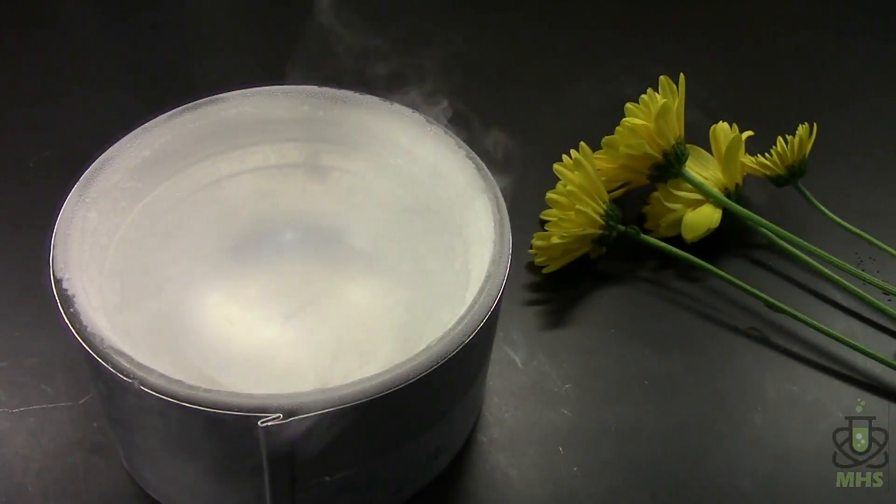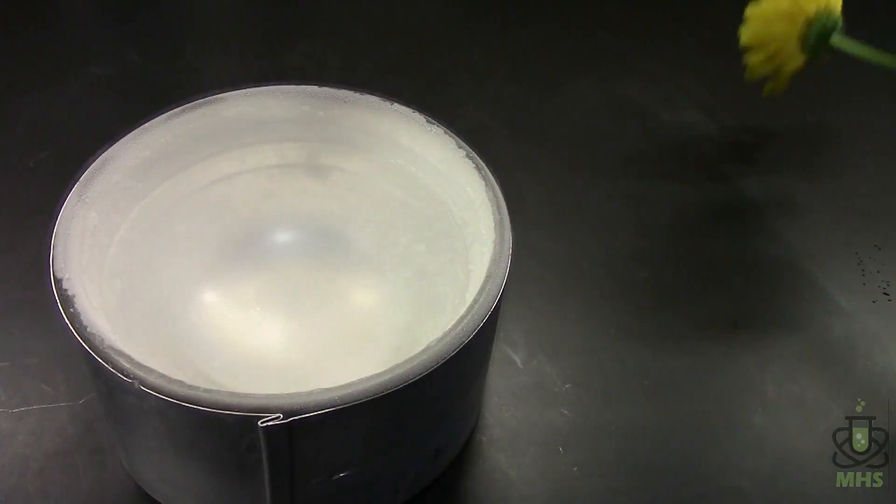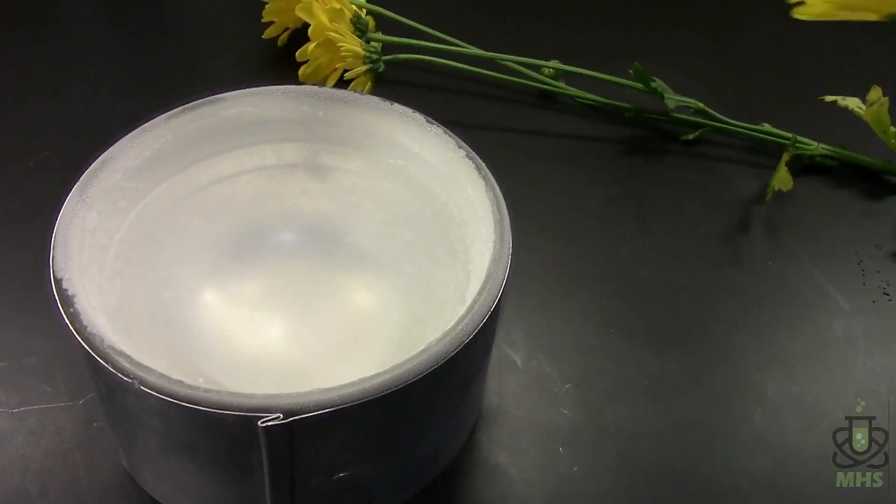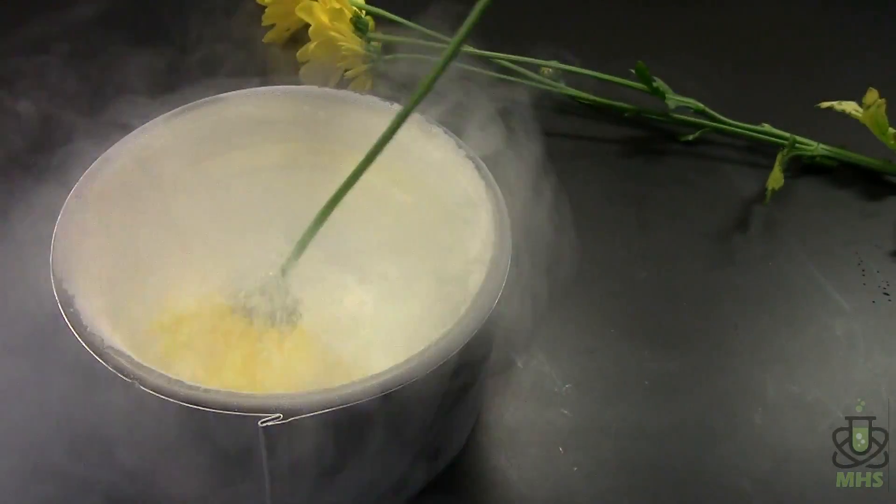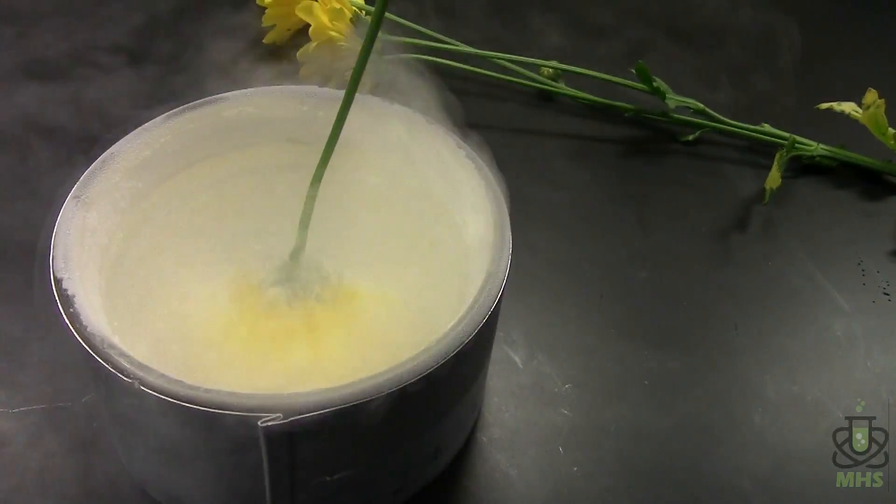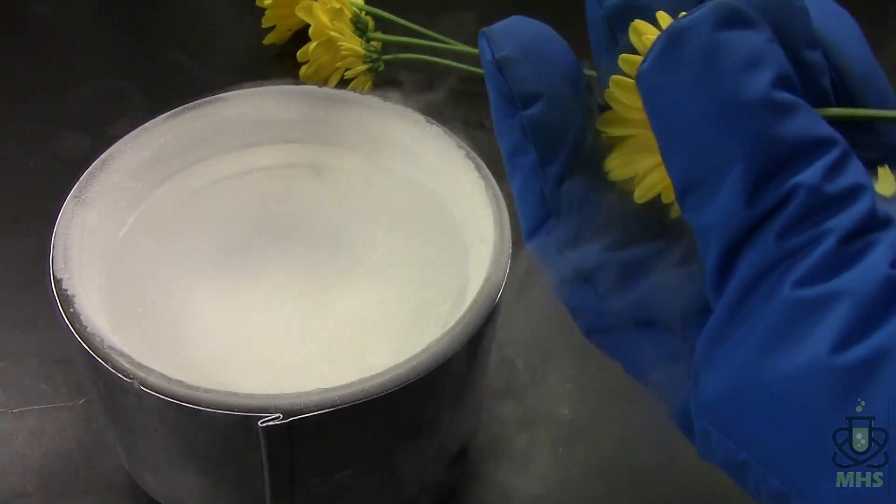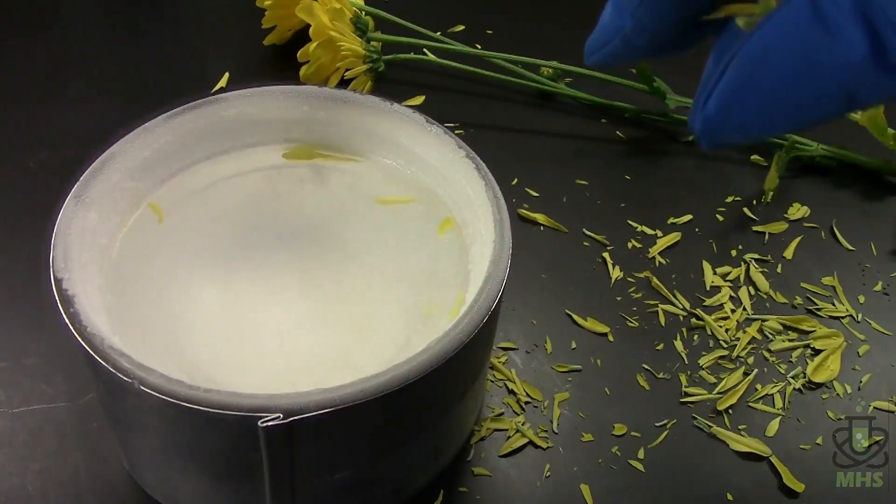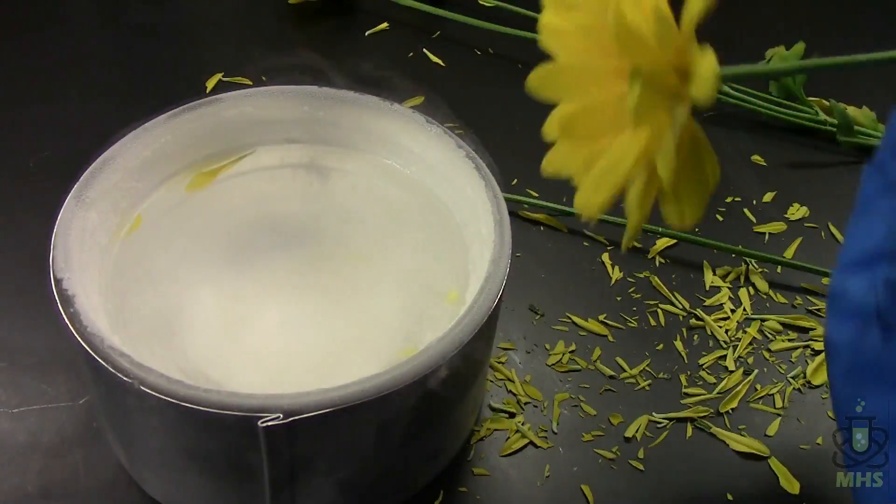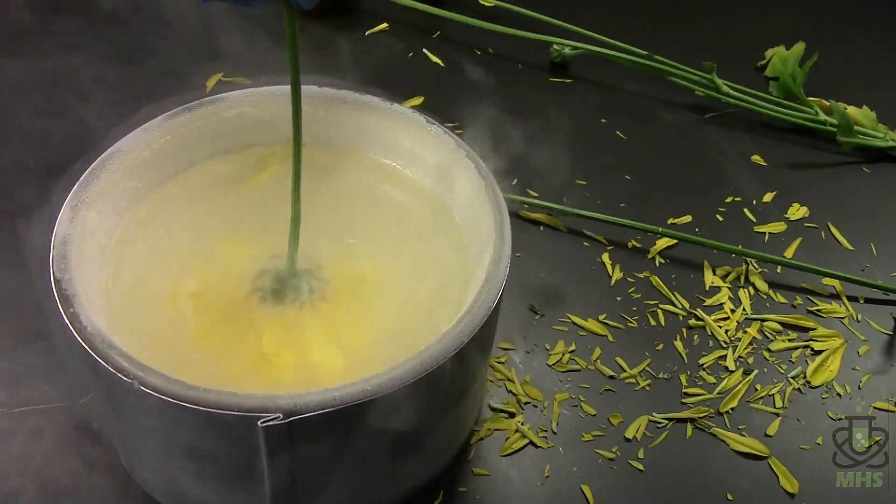So if you have liquid nitrogen, of course, you've got to freeze and shatter stuff. So I like to do flowers a lot because they're very fun and easy to do. So what we do is just stick them in there and see what happens. And it actually goes very, very quickly because the petals on the flowers are so thin, so they freeze almost instantly. Now we've got a nice, pretty cold flower. Petals sound like glass. I'll do one more. Freezes pretty much immediately.